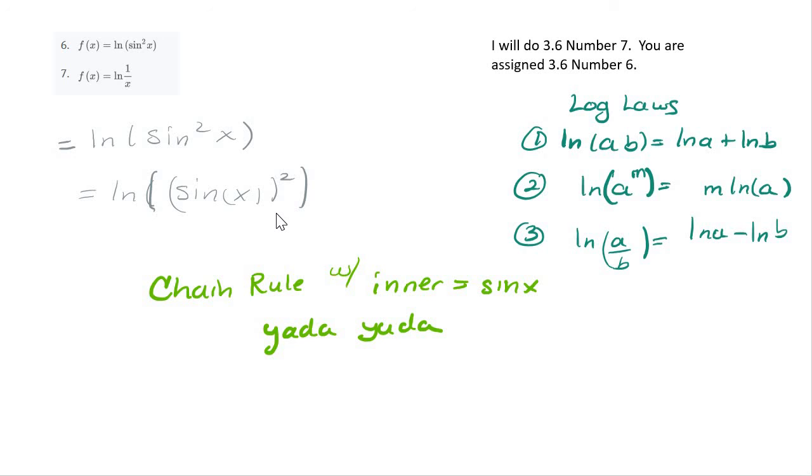It's going to be a chain rule. Once that two comes out in the front, you're going to have an inner, which is sine x, and then define your inner by taking your thumb, covering up the inner, replacing your thumb with an x, and yada yada yada. So this is where we go from here. Good luck on this one, and I'm willing to look at it if you get it to me in time.